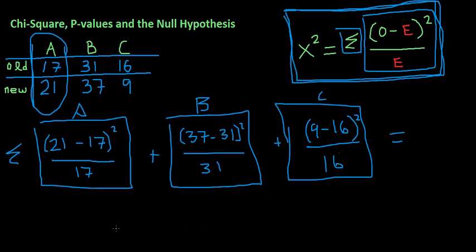Okay, now let's do the math here. So for our A's we have 21 minus 17, squared, divided by 17, and that is .94. Let me just make sure I did that right. Alright, so for your B's, same story, 37 minus 31, squared, divided by 31. That's 1.16. And then for our last one, we have 9 minus 16, squared, divided by 16. And that's 3.1.